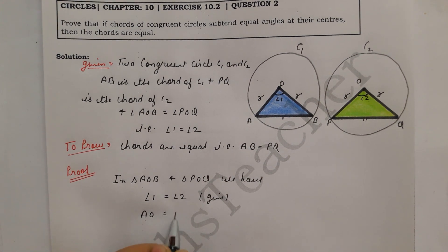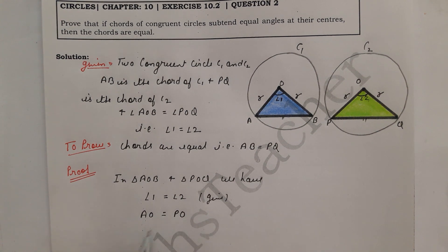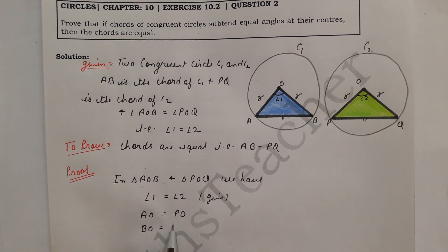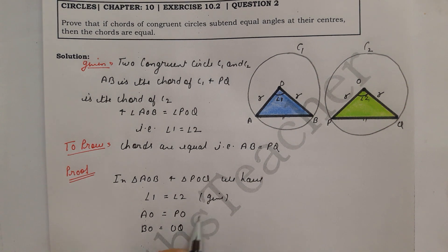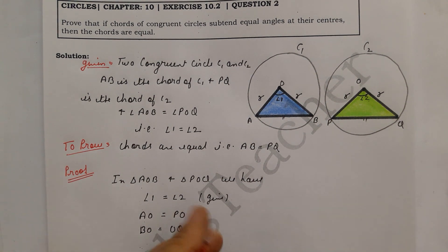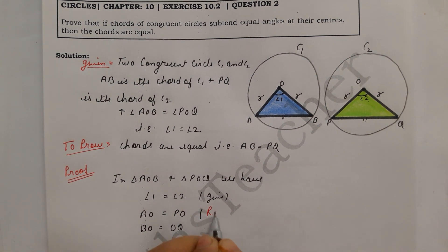AO equals PO, and BO equals OQ. The reason to write here is: radii of congruent circles are equal. This is because the circles are congruent, so the radii will be equal.